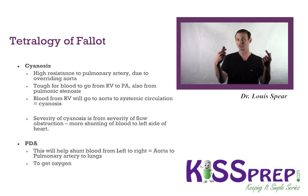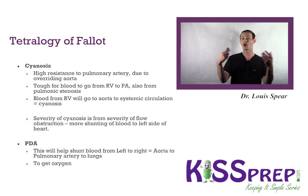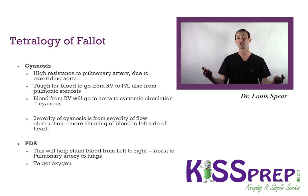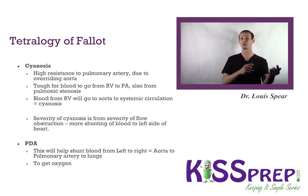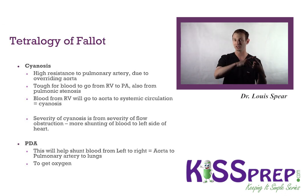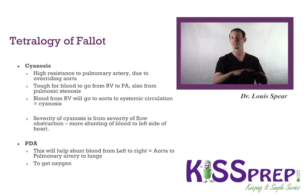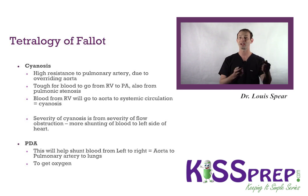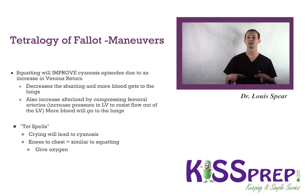So how do people survive? If you have a patent ductus arteriosus (PDA) that is open, it will help shunt blood from left to right — the aorta will give blood to the pulmonary artery to the lungs, helping it get oxygen. So if somebody has Tetralogy of Fallot, you want to keep the PDA patent, and you do that with prostaglandins.